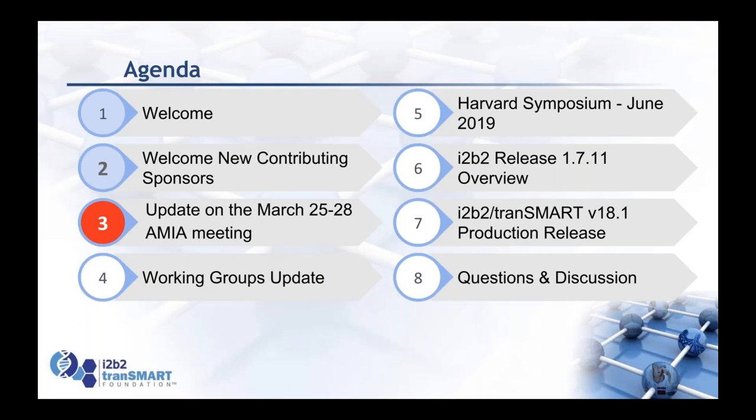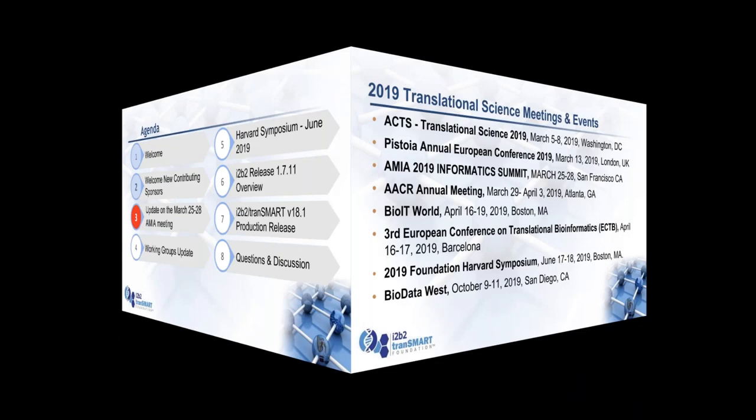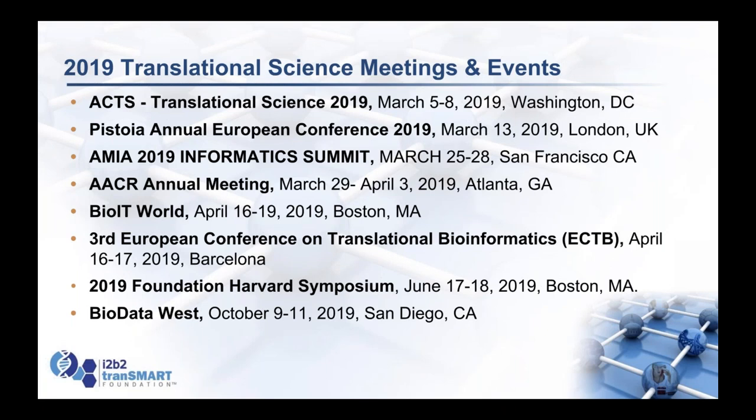There are a number of meetings that will take place this year. I want to highlight just a couple. This is a complete list of the translational science meetings and events in 2019. The two I want to highlight are the AMIA Informatics Summit coming up March 25th through 28th in San Francisco, and the Harvard Symposium that Rudy will talk about. We don't have a formal event planned for AMIA in March, but I think we'll organize a dinner to get people together in an informal setting.